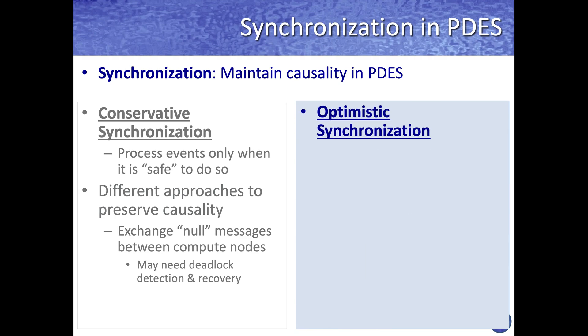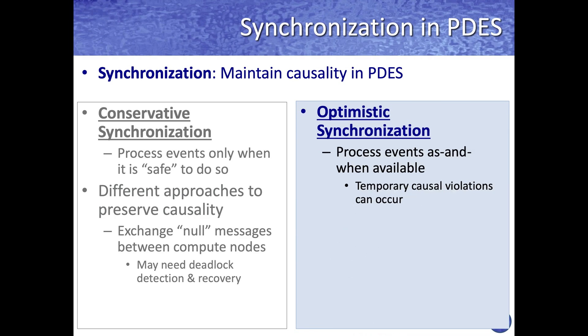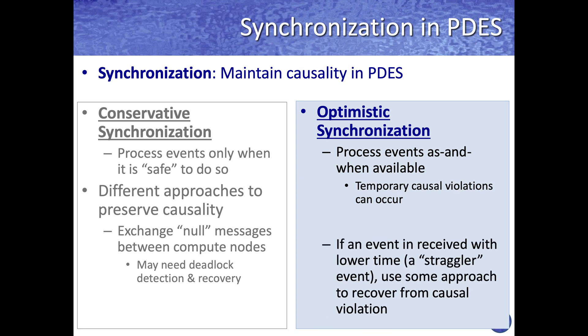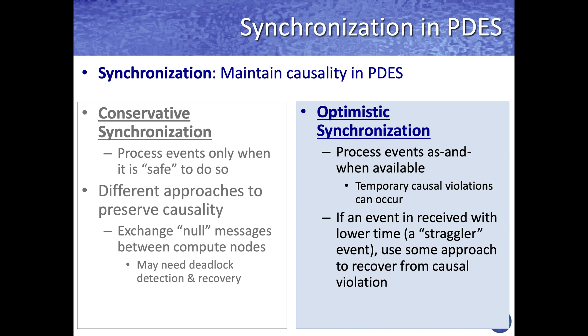A more recent approach is optimistic synchronization, where events are processed as soon as they are available. This can lead to temporary violations of causality. Causal violations are detected when a straggler event with a lower timestamp is received, and different approaches are used to recover from such violations.